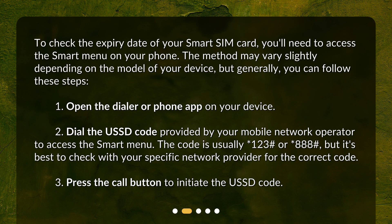Dial the USSD code provided by your mobile network operator to access the smart menu. The code is usually *123# or *888#, but it's best to check with your specific network provider for the correct code. Then press the call button to initiate the USSD code.